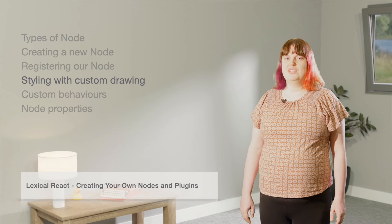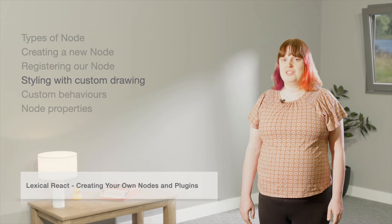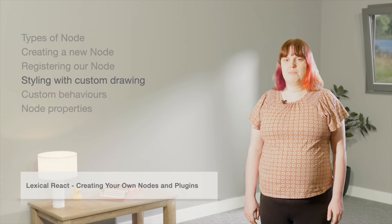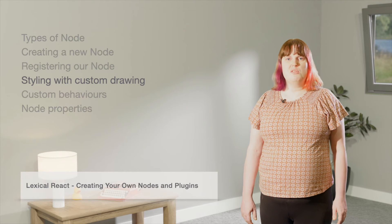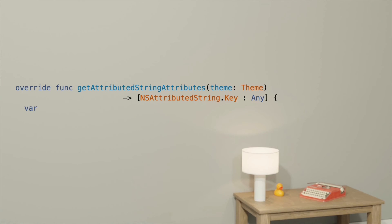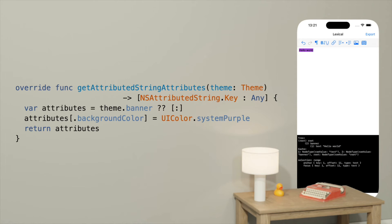The first thing we want is a background color. TextKit does have a background color attribute, so you might be tempted to try that. We can insert the attribute into our getAttributedStringAttributes method, and... that isn't what we want. The background color is only displaying where there is text, but we want it to be the full width. We're going to have to draw it ourselves.